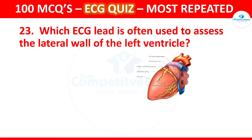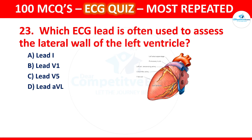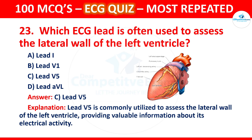Question 23: Which ECG lead is often used to assess the lateral wall of the left ventricle? Options are Lead 1, Lead V1, Lead V5, or Lead AVL. The correct answer is Lead V5. Lead V5 is commonly utilized to assess the lateral wall of the left ventricle, providing valuable information about its electrical activity.